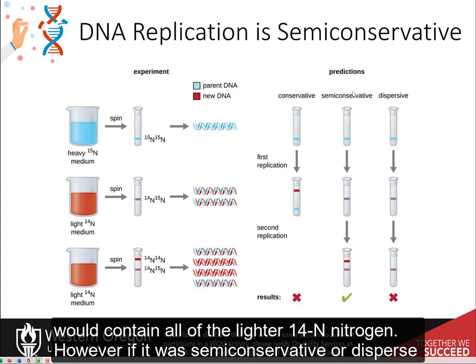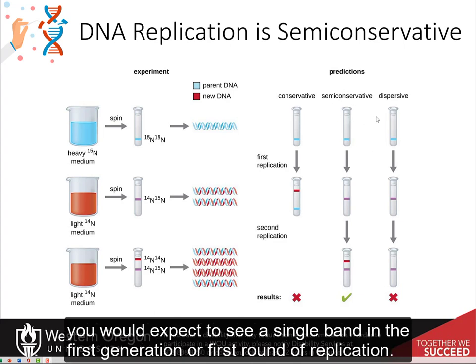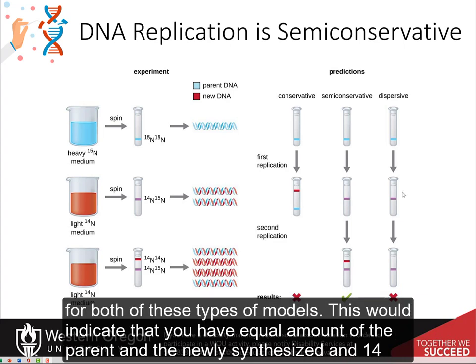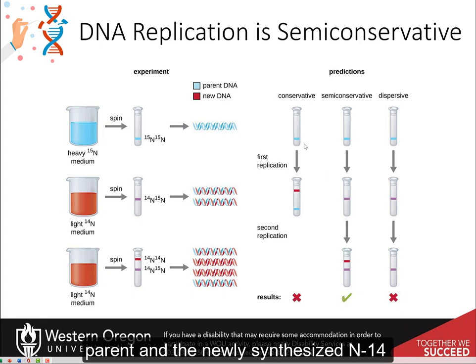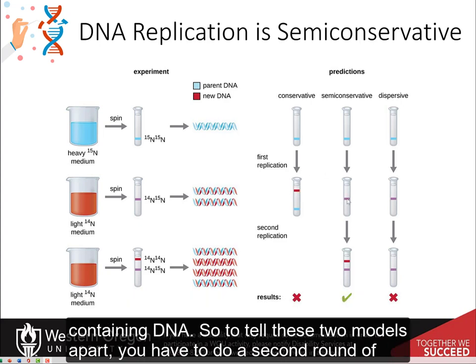However, if it was semi-conservative or dispersive, you would expect to see a single band in the first generation, or first round of replication, for both of these types of models. This would indicate that you would have equal amounts of the parent and the newly synthesized N14-containing DNA.